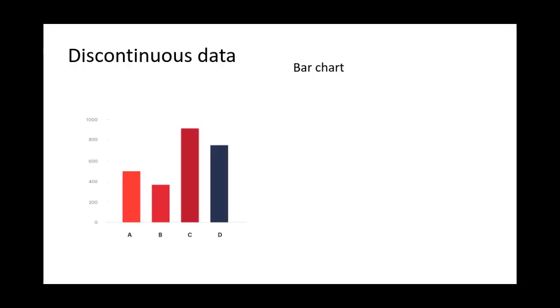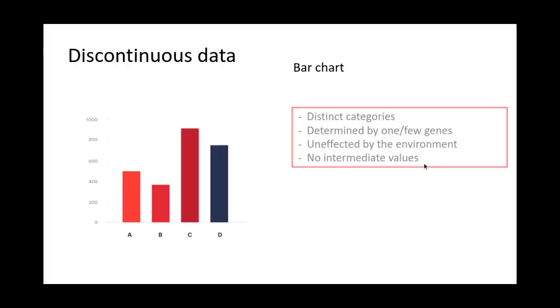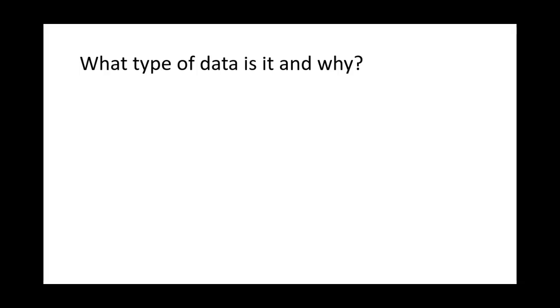Discontinuous data is represented using a bar chart. We have distinct categories - here we have A, B, C, and D. They're determined by one or a few genes, are unaffected by the environment, and there are no intermediate values. A good example is blood type. You can be A, B, or AB, but you can't be a mixture of all three. That's discontinuous data and discontinuous variation.